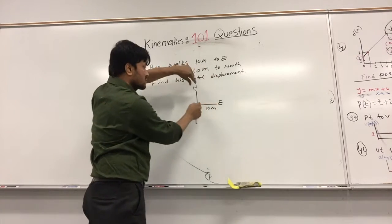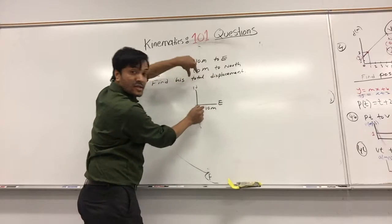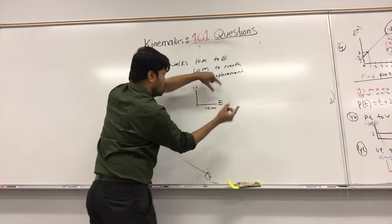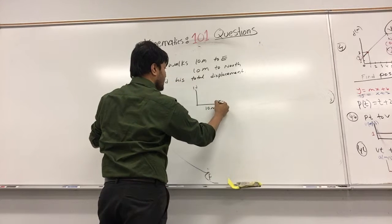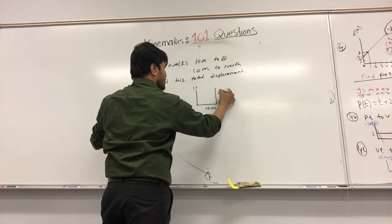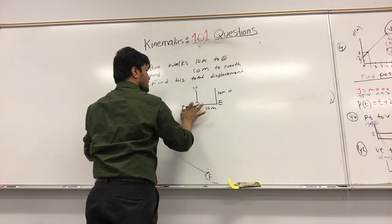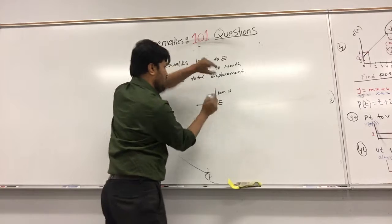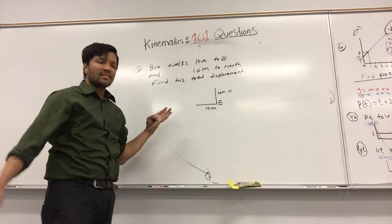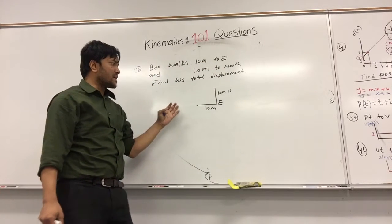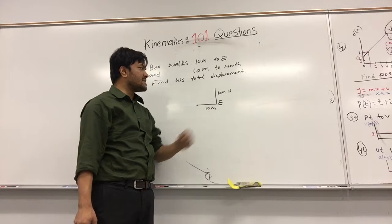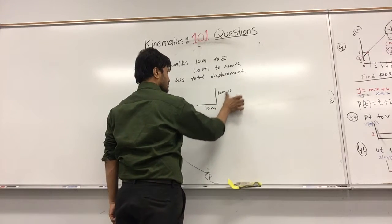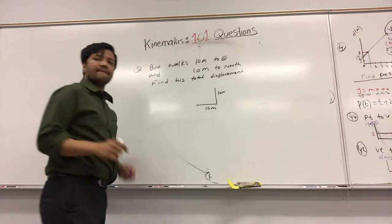Take this and move it over here. If you move it over here, then it's 10 meters to the north. So the band moves 10 meters to the east and 10 meters to the north. We have to find the total displacement.